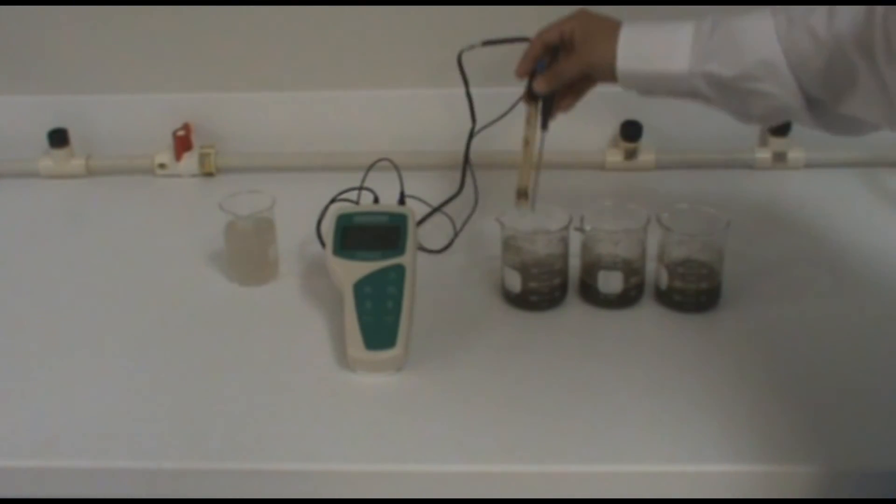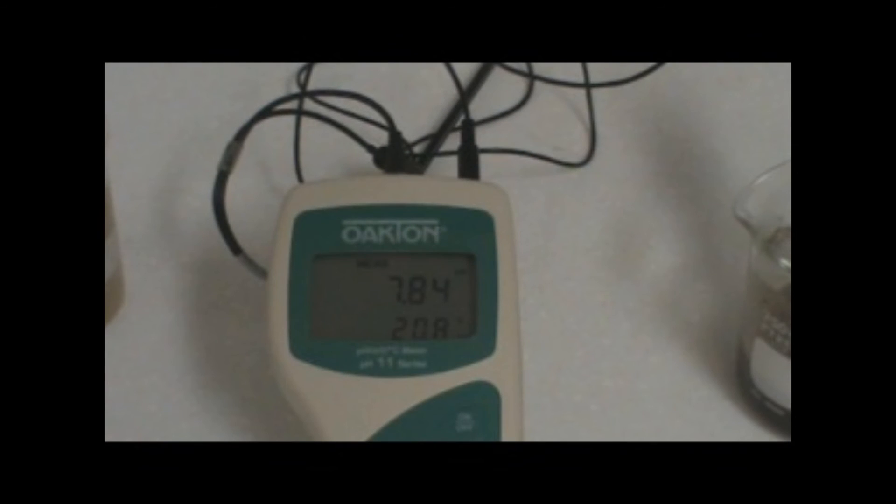After you have done this, you will then take the average of the three readings in order to get a value for the pH of your soil.